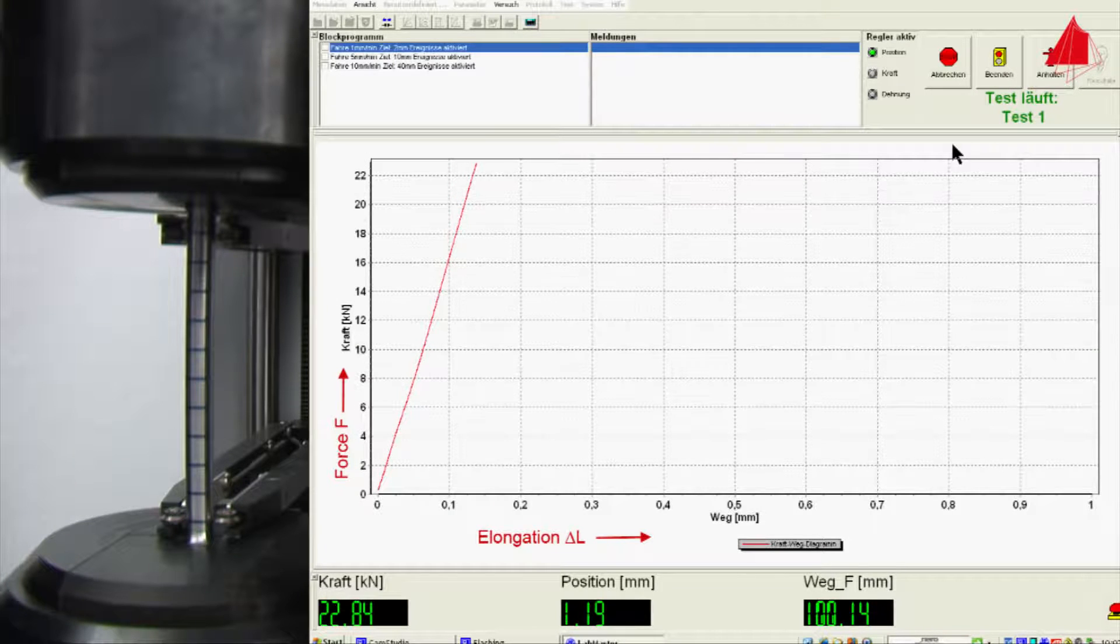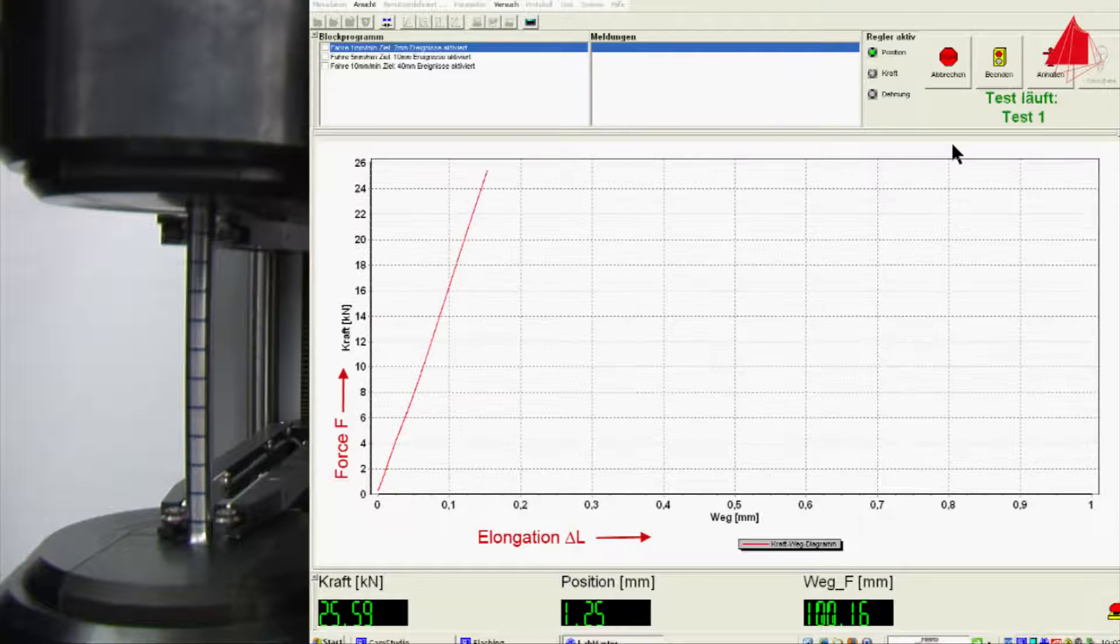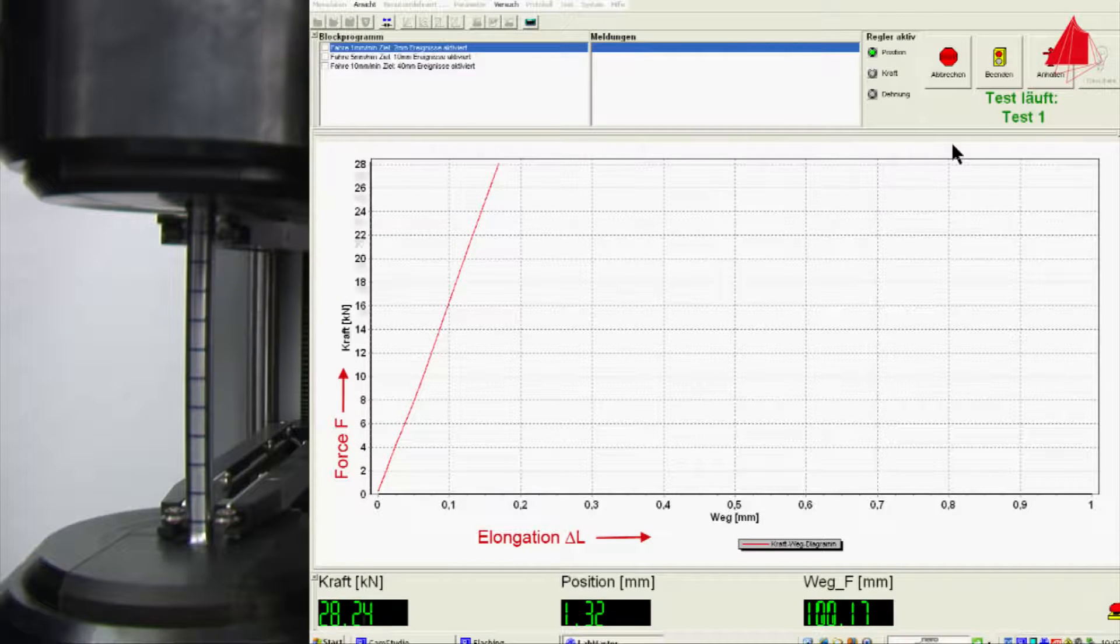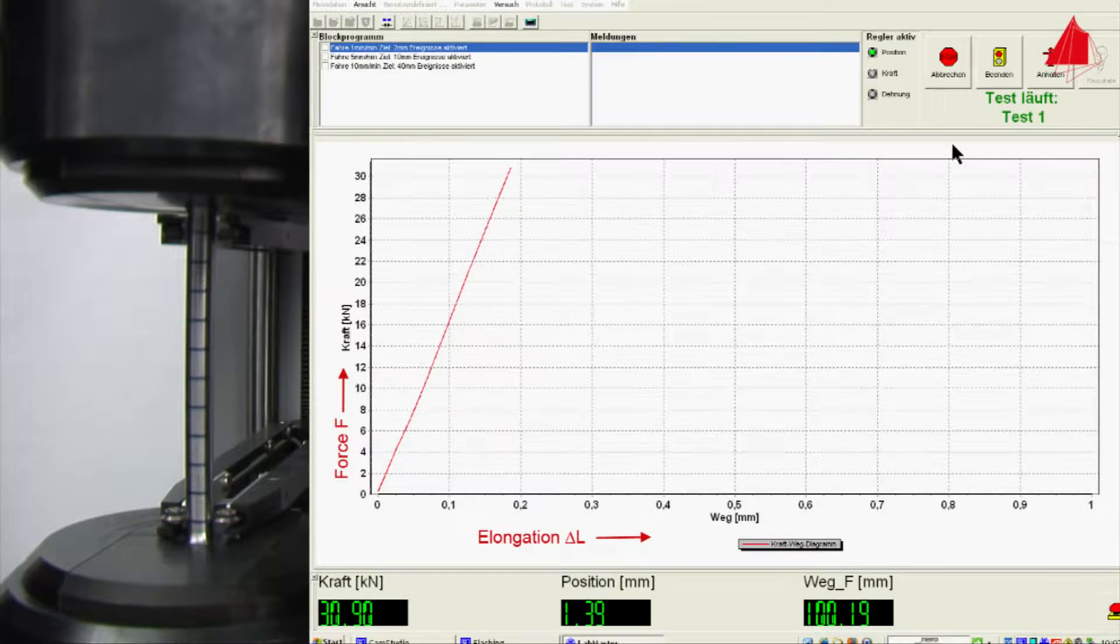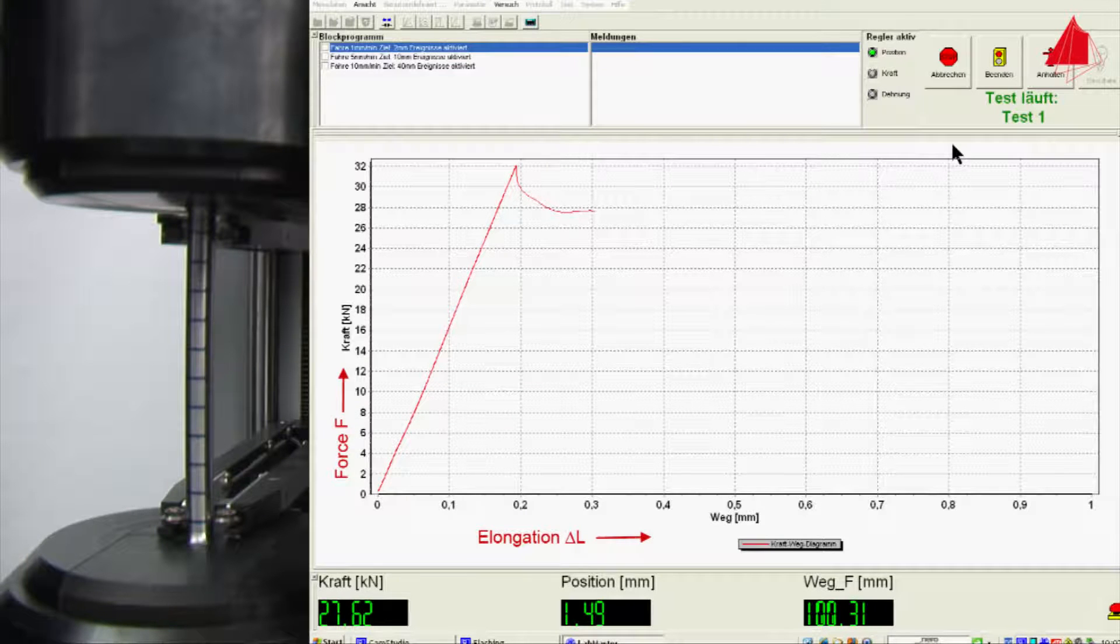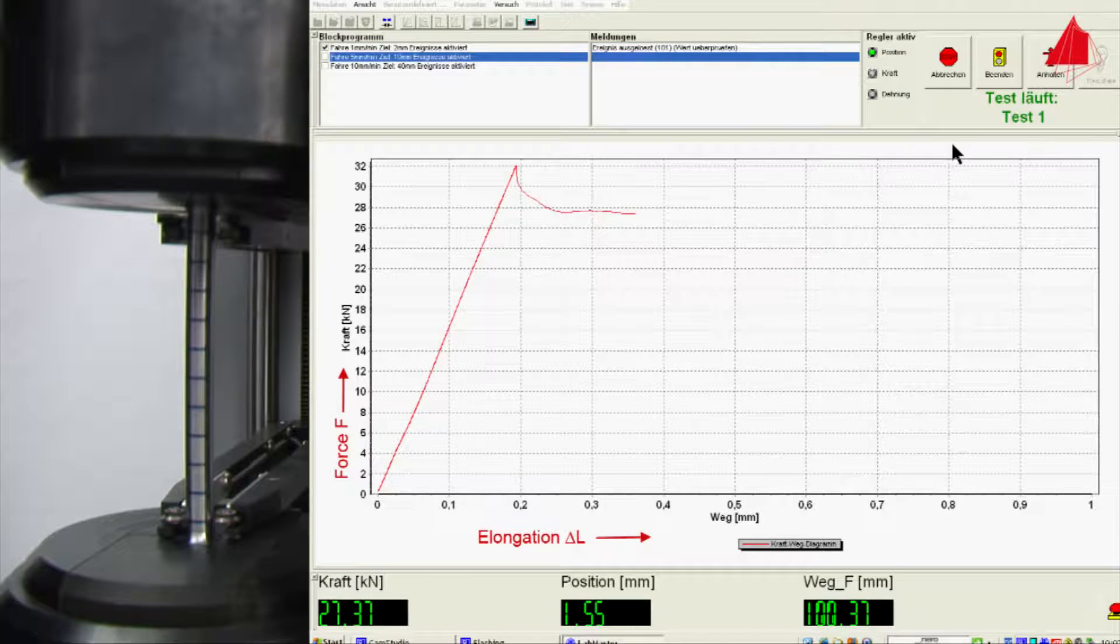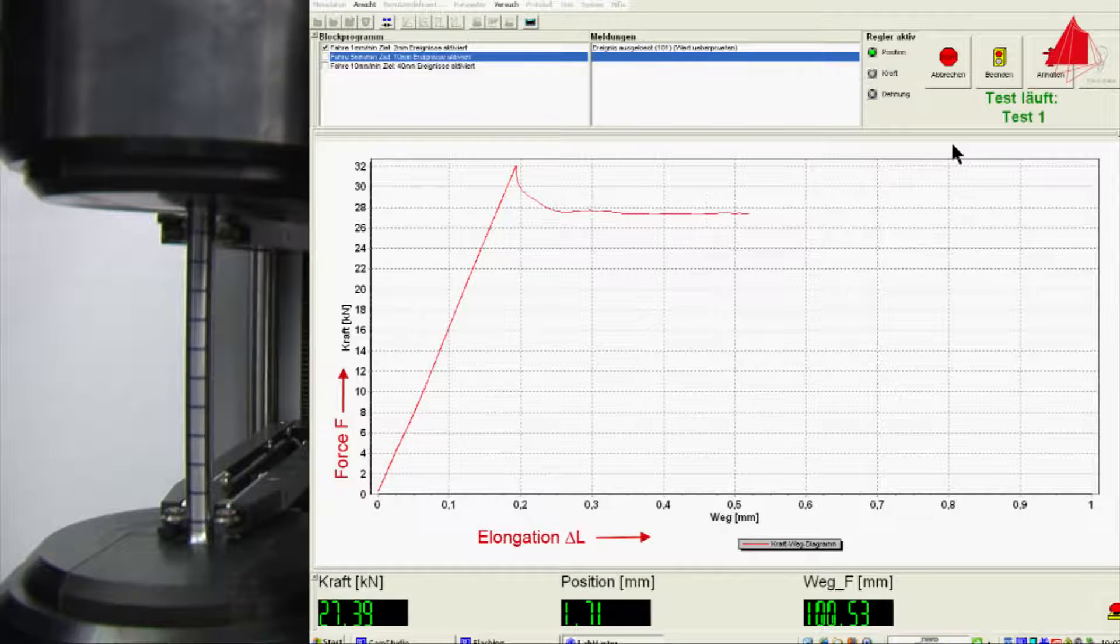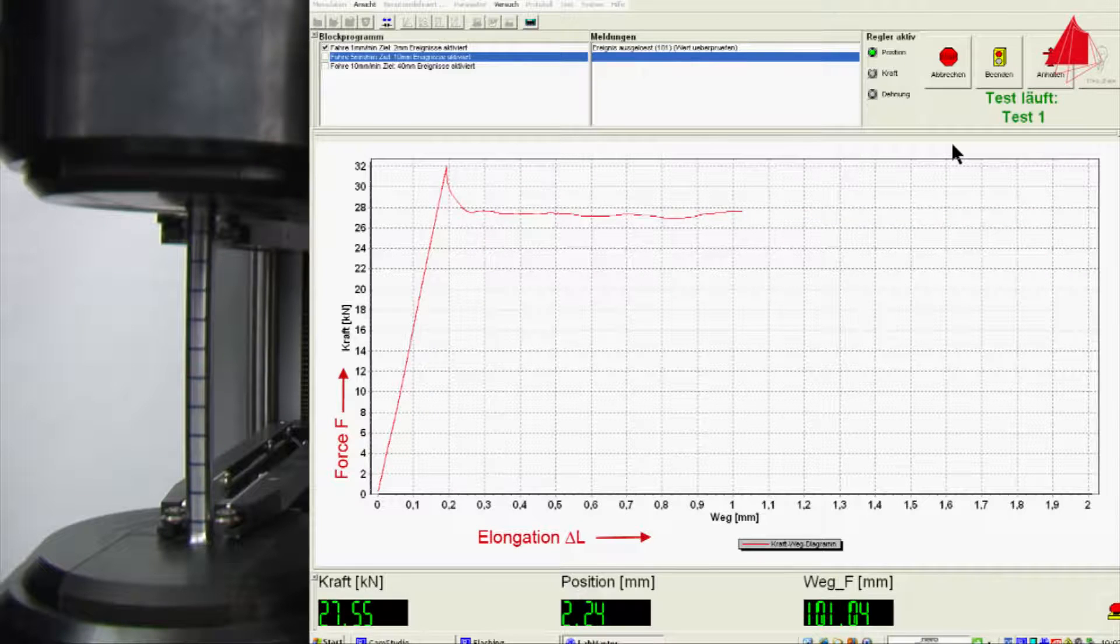In materials with yield point phenomenon, the end of the elastic area can be seen clearly. The plastic deformation starts abruptly and is accompanied by a sudden drop of force. If the test piece were to be unloaded now, it would not spring back to the original length but instead show a permanent elongation.